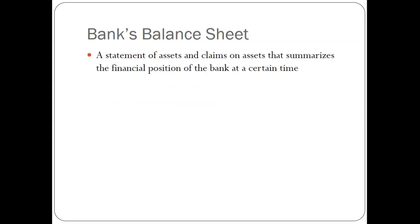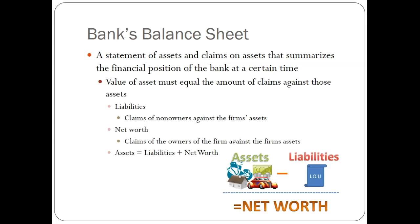Next, we're going to talk about a bank's balance sheet, sometimes referred to as a T-chart. A bank's balance sheet is a statement of assets and claims on assets that summarizes the financial position of the bank at a certain time. The value of assets must equal the amount of claims against them. We have three things: liabilities, net worth, and assets. Assets are stuff that is in the bank — like cash, property, or equipment.